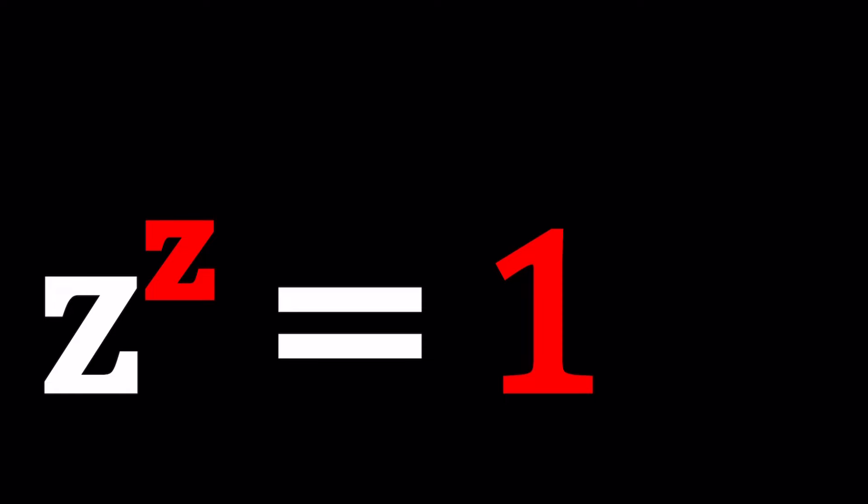We have Z to the power Z equals 1 and we're going to be solving for Z values. Now Z equals 1 looks like an obvious solution, doesn't it? Is there another one? Go ahead and check out this video for more information on this topic.